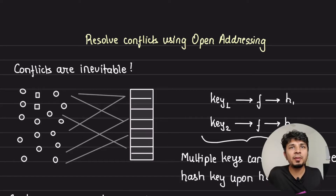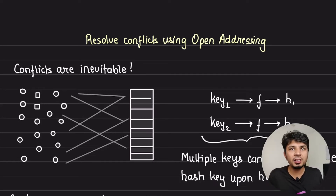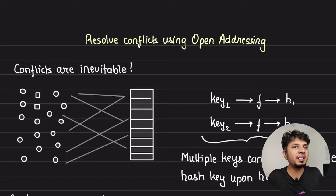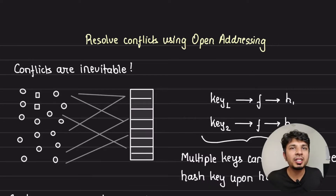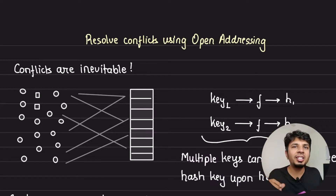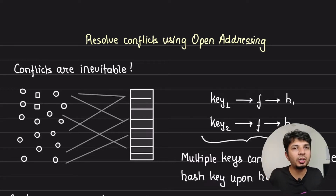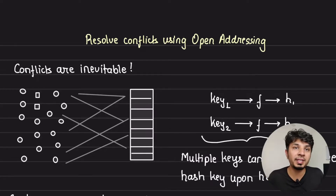Although chaining is a popular way of handling hash table collisions, there is a very interesting way of achieving the same, and it is called open addressing. The key highlight of open addressing is that it does not require any additional data structure to hold the collided keys, making them super space efficient.